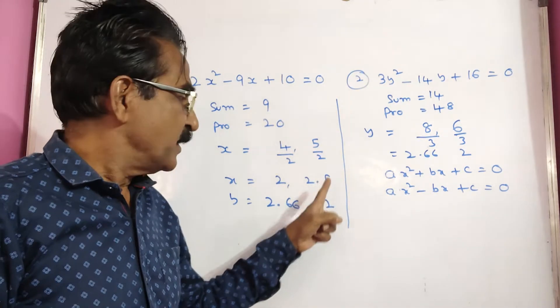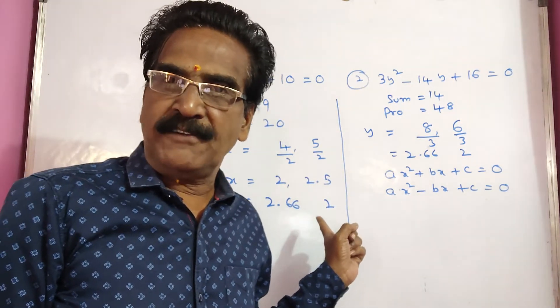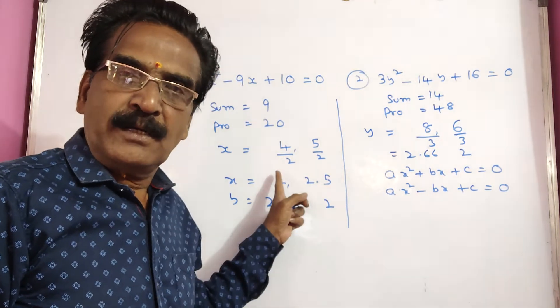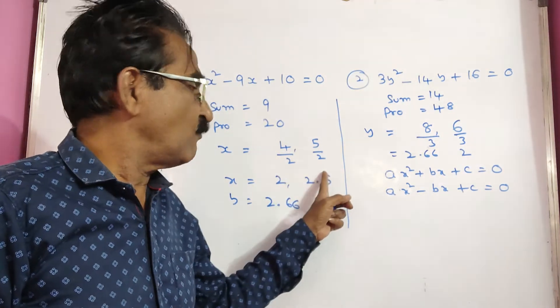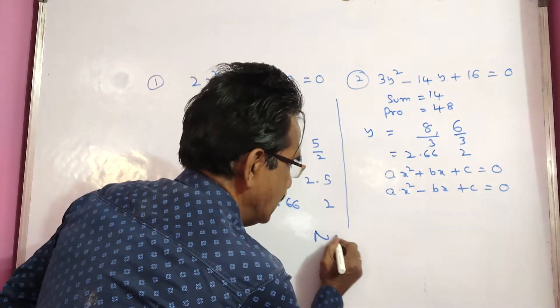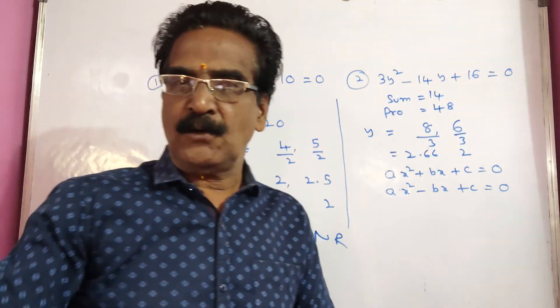But here, 2.5 is greater than 2. So one time we are getting less than, one time we are getting greater than. And hence, no relation, friends.